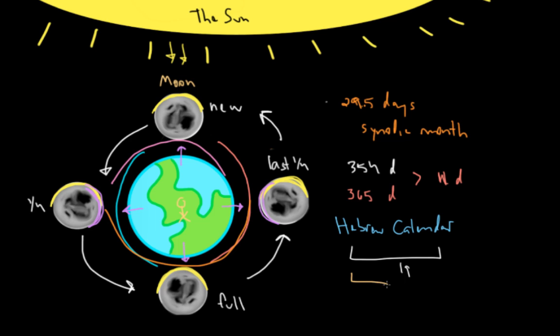And seven of these are going to be leap years, whereas the remaining 12 are going to not be leap years. And the seven years aren't at random. It's specifically years 3, 6, 8, 11, 14, 17, and 19.